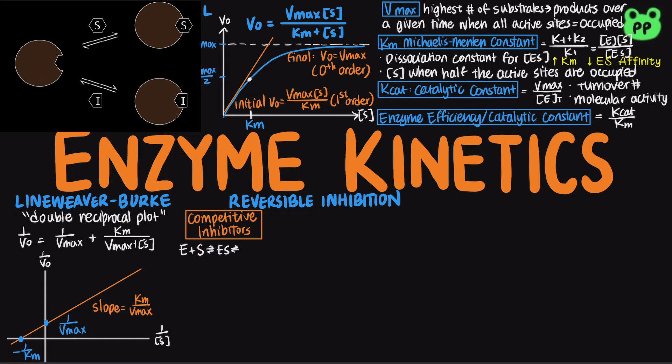The inhibitor, abbreviated as I, combines with the free enzyme to form the enzyme inhibitor complex, or EI complex. The maximum velocity, or total catalytic ability, remains constant.